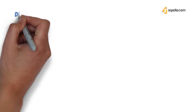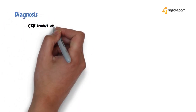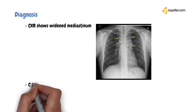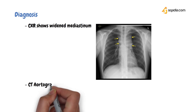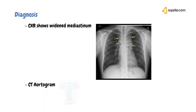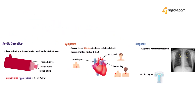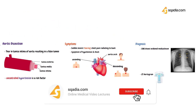To diagnose this condition, a chest X-ray done initially will reveal a widened mediastinum due to the dissection. A CT aortogram is done to confirm the diagnosis and pinpoint the location of dissection in the aorta. There is the risk of missing the diagnosis entirely due to its similarity to angina or myocardial infarction. However, this disease can be immediately life-threatening and prompt diagnosis is necessary to improve chances of survival.